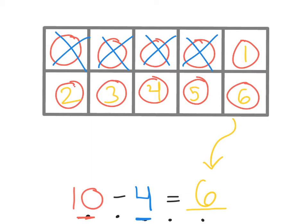To read your completed equation or number sentence, you say 10 minus 4 equals 6.